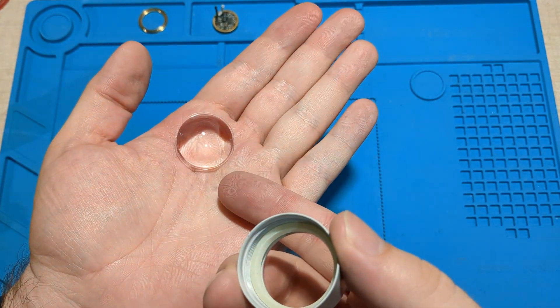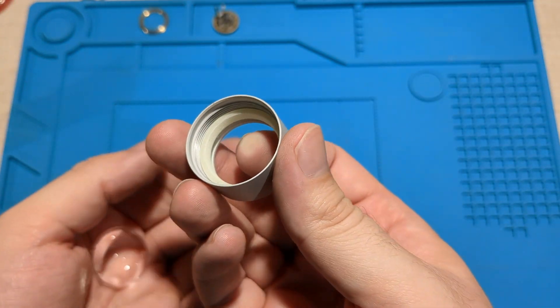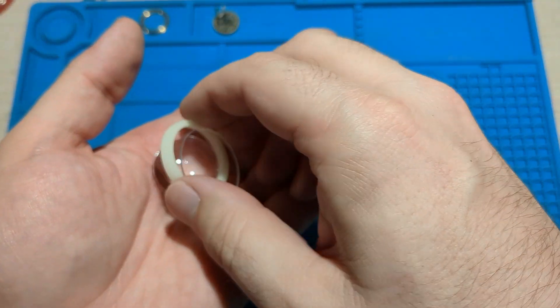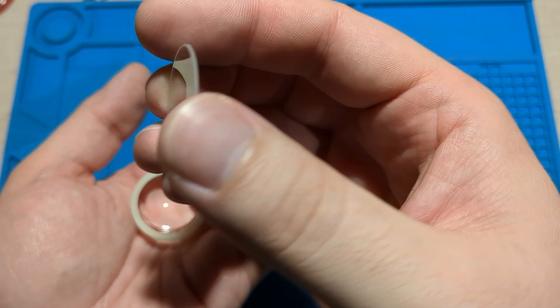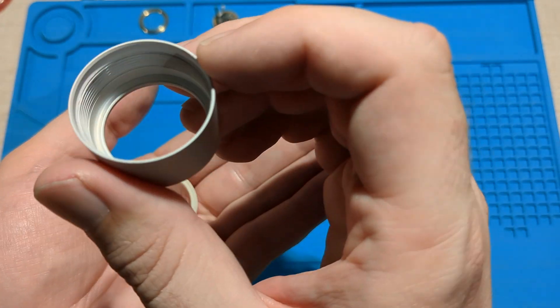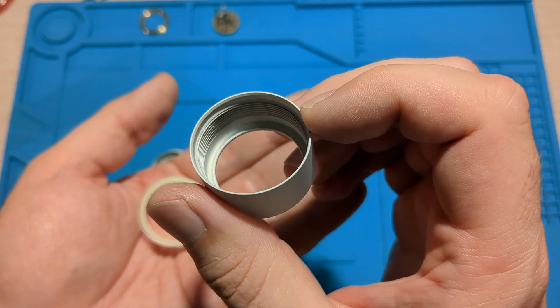So we have the lens. There is a glow in the dark ring, a glass lens on top, and then there should be an O-ring just on the lip of that bezel there.